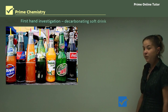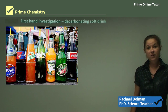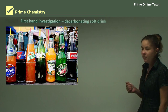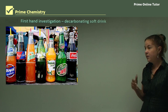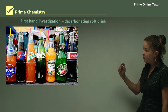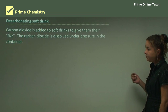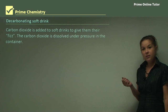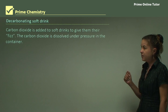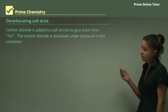In this lesson I'll be describing a first-hand investigation or experiment looking at decarbonating soft drink. Here is a range of different soft drinks containing carbon dioxide. We're looking at taking carbon dioxide out of the soft drink - when you open it you see the bubbles, and that's the CO₂ gas coming off. Carbon dioxide is added to soft drinks to give them their fizz and bubbles, and it's dissolved under pressure in the can or bottle.